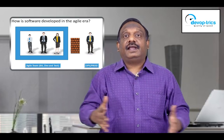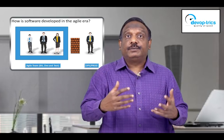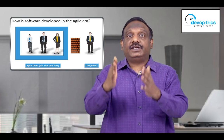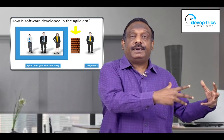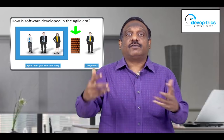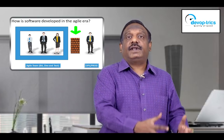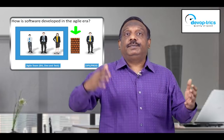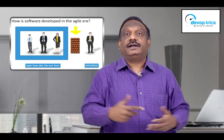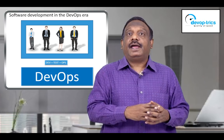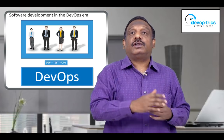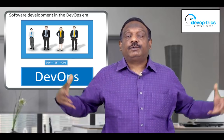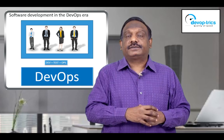Agile has helped software development teams worldwide to produce software in a very frequent, iterative manner. But still, even in agile, a wall of confusion exists between the development team and the operations team. Though in agile we are able to produce software very rapidly, the software is not being taken to the end user as swiftly as needed. That is where DevOps solves the problem — DevOps aims at breaking that remaining wall of confusion between development and operations and making all of them work together.